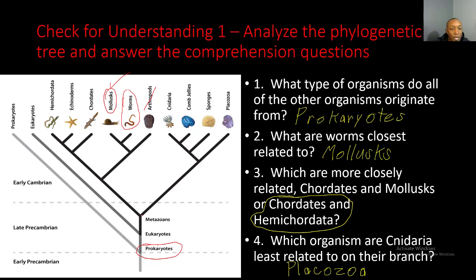Number three: which are more closely related — chordates and mollusks, or chordates and hemichordata? Chordates and hemichordata are on the same branch together, while mollusks are on a different branch. So chordates are more closely related to hemichordata than they are to mollusks, because chordates and hemichordata come off the same branch.